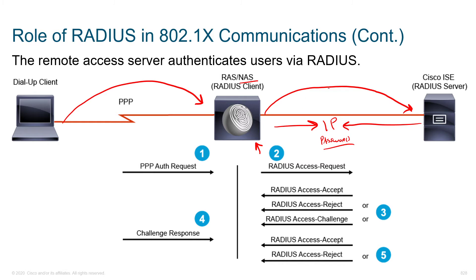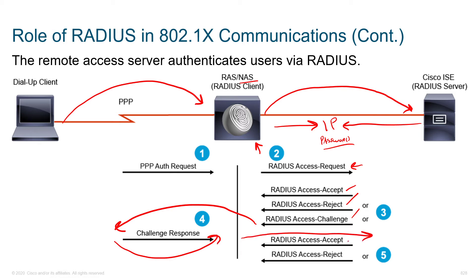The way this works: we pass credentials back to the RADIUS server with an access request. What can come back is an accept, a reject, or a challenge. If there's a challenge, we pass that to the user; the user sends a response back, then we push that response to the server, at which point it comes to accept or reject again. What's neat is that when the accept comes back — assuming credentials were entered correctly — it's 'accept and take these AV pairs.' Authentication and authorization happen in one fell swoop: when we authenticate, it says yes, that person's allowed in, and here are the details that go along with it.